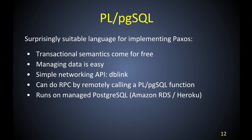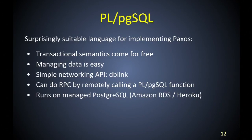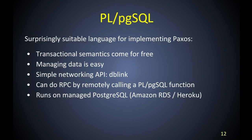PL/pgSQL is surprisingly suitable for implementing distributed algorithms. You get transactional semantics, it's easy to collect a bunch of responses in a table and query them, and there's a simple networking API for RPC — remote procedure calls. I can just create a function which is called on the remote end, and create another function that uses DBLink to call it. Because it's PL/pgSQL, Amazon RDS and Heroku both have DBLink installed, so I could even run this on Amazon RDS. I couldn't do the transparent table replication, but the Paxos functions would work.